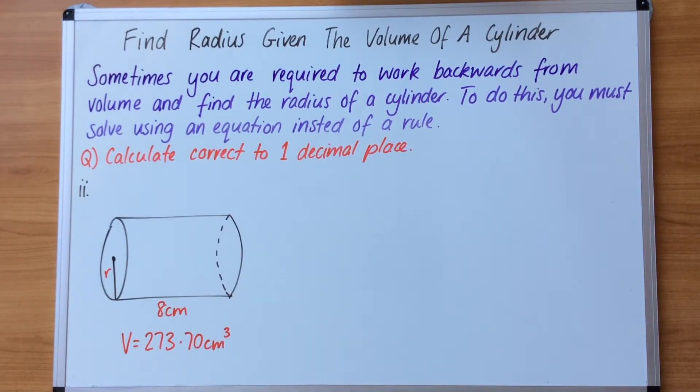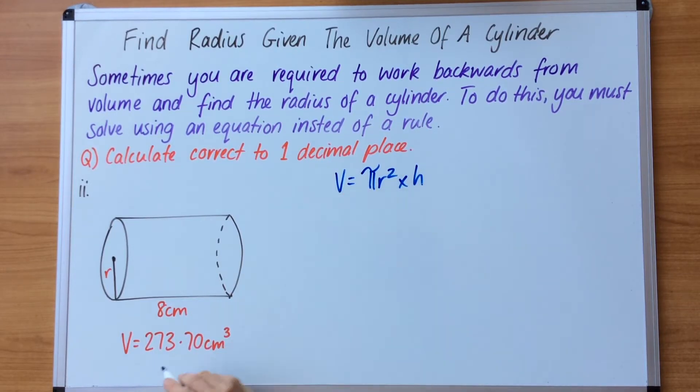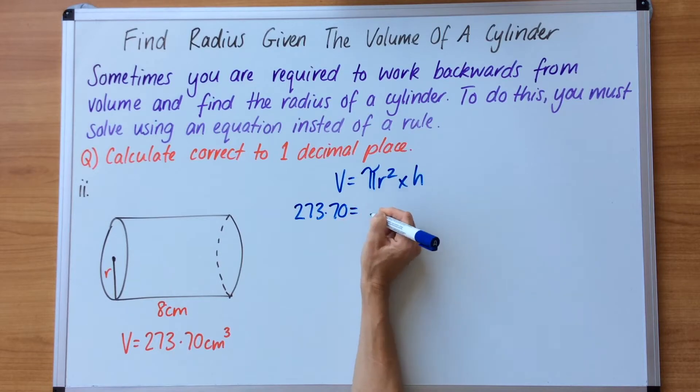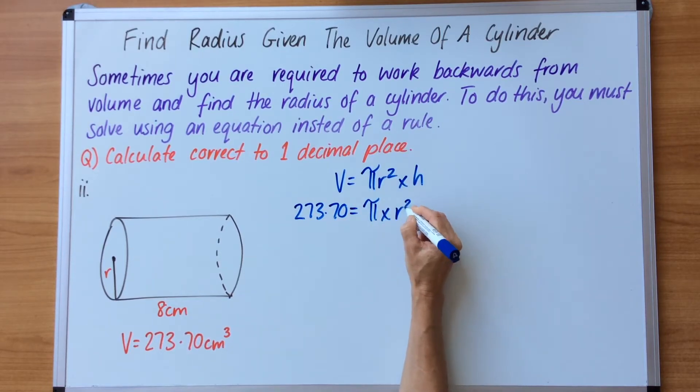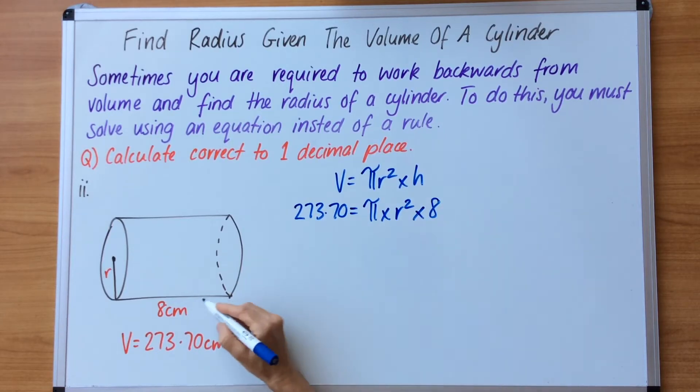Here is a second question to focus on. We are going to do exactly the same thing we just did before. We are going to take the normal rule, switch it around and turn it into an equation. So the first thing we have to do is write volume equals pi r squared times height. Our second line is substitution. So we then change the V for volume for what we already know here, which is 273.70 equals pi times radius squared, we don't know what the radius is just yet, multiplied by the height of 8.